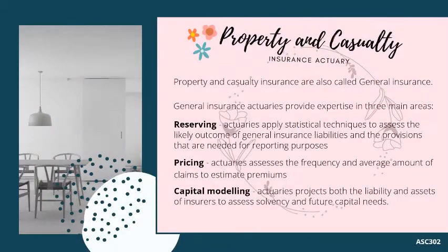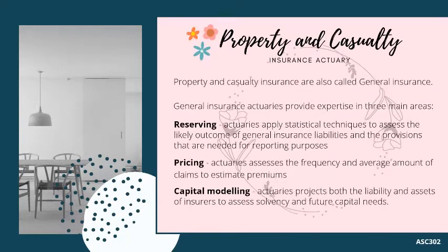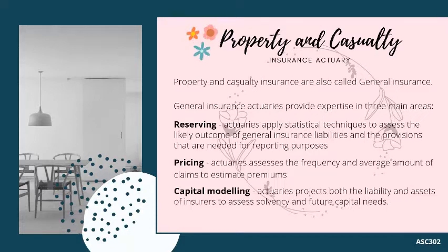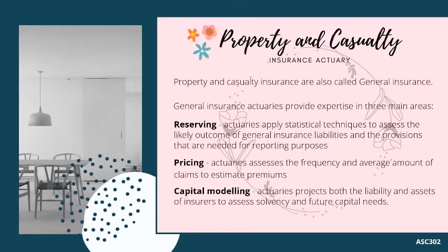The fourth type is property and casualty insurance, widely known as general insurance. General insurance actuaries provide expertise in three main areas. First, reserving: actuaries apply statistical techniques to assess the likely outcome of general insurance liabilities and the provisions that are needed for reporting purposes.